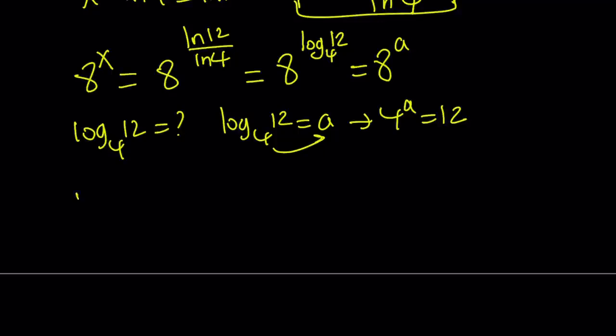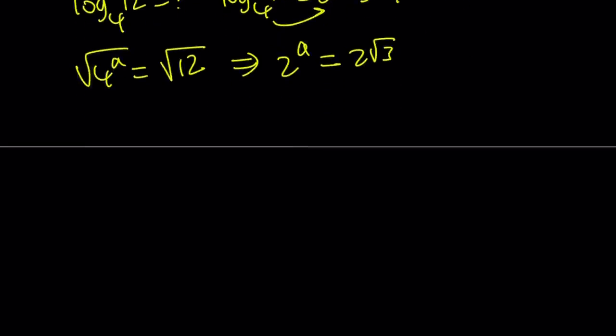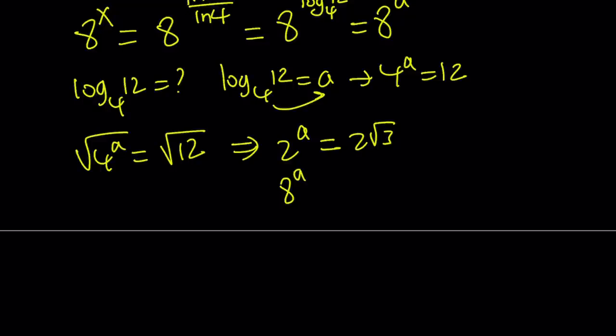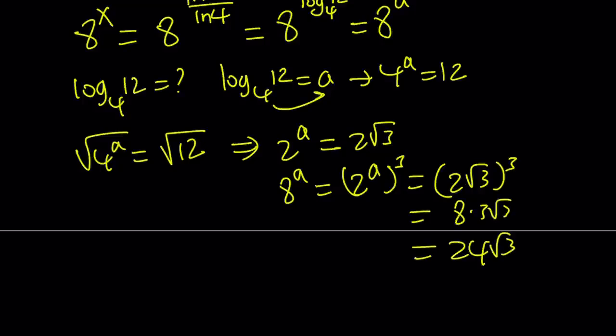So here's what I'm going to do. I'm going to square root both sides. And notice that 4 to the power a or square root of that, which is 2 to the power a, cannot be negative. So this is going to be 2 root 3. And then from here, we got 2 to the power a. We need 8 to the power a. And 8 to the power a is 2 to the power a cubed. So the answer is 2 root 3 cubed, which is 8 times 3 root 3. And that can be written as 24 root 3.